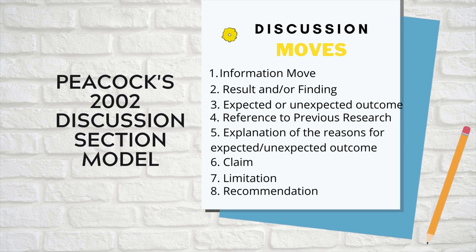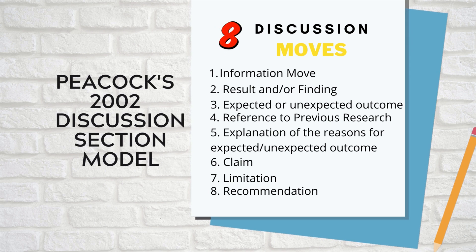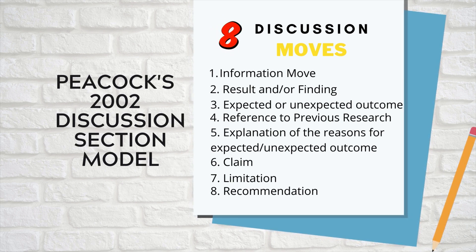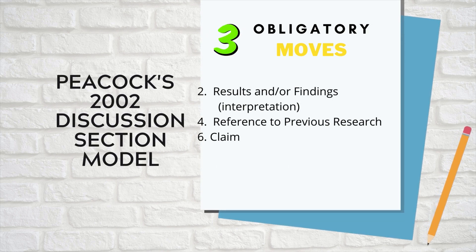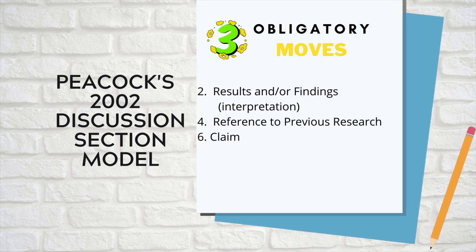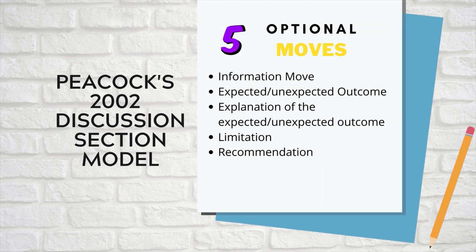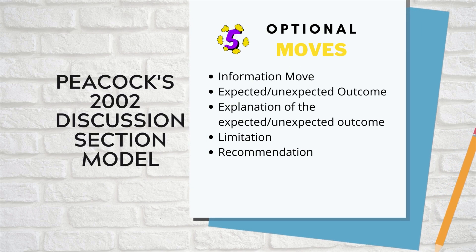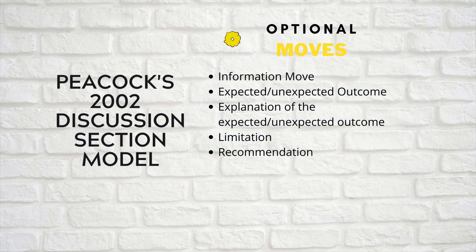The eight moves are: information move, result and/or findings, expected or unexpected outcome, reference to previous research, explanation of the reasons for move three, claim, limitation, and recommendation. Among the eight moves, three are obligatory — move two, move four, and move six — and the other five are optional: information move, expected or unexpected outcome, explanation of the reasons for move three, limitation, and recommendation.